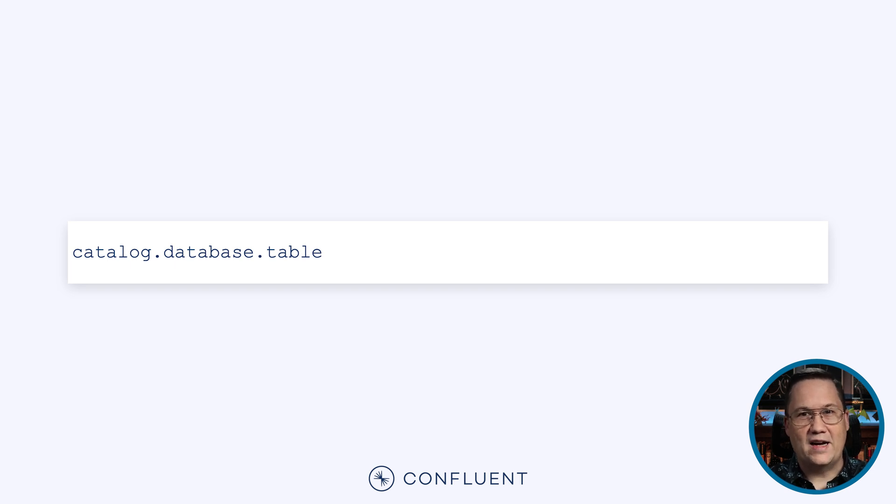So if we had an identifier that looked like this, we could go to the e-commerce catalog, locate the marketplace database, and look for the orders table. Usually you have to define all of these structures yourself — you have to create the catalogs, the databases, and even the tables. Granted, you could skip creating the catalogs and databases, but then you lose the organization and discoverability they provide, especially in a larger system.